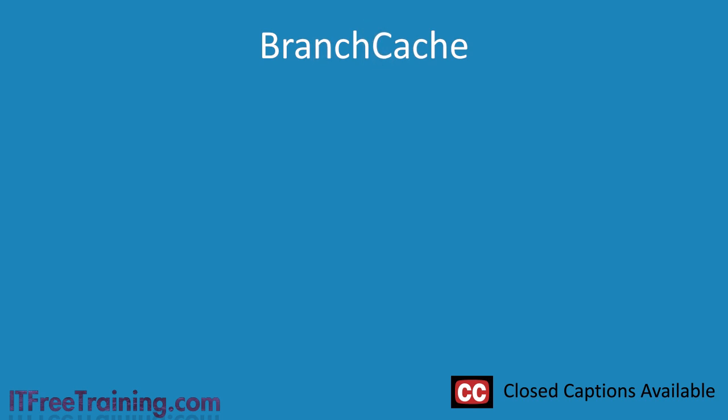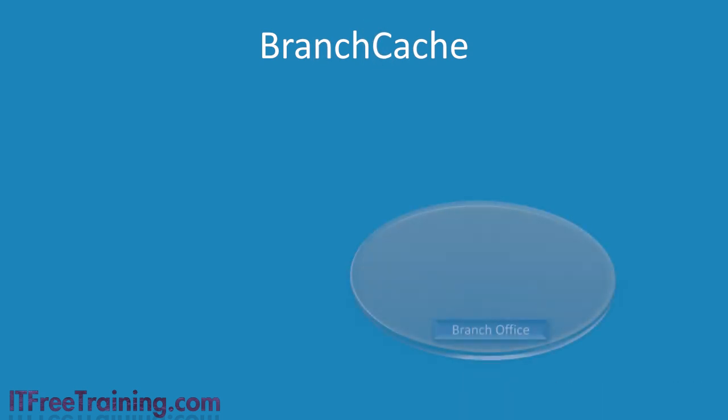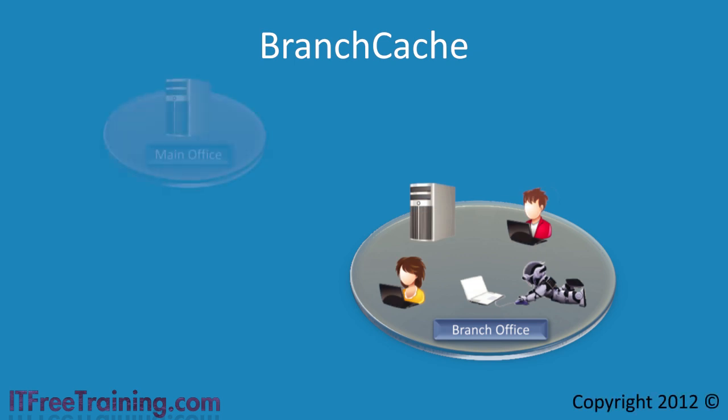It is not uncommon for companies to have branch offices connected to a central office. Internet speed and connections are getting better, but sometimes you may find the link between the head office and a branch office to be quite slow and may even be unreliable. This especially may be the case when you are dealing with links that travel halfway across the world.